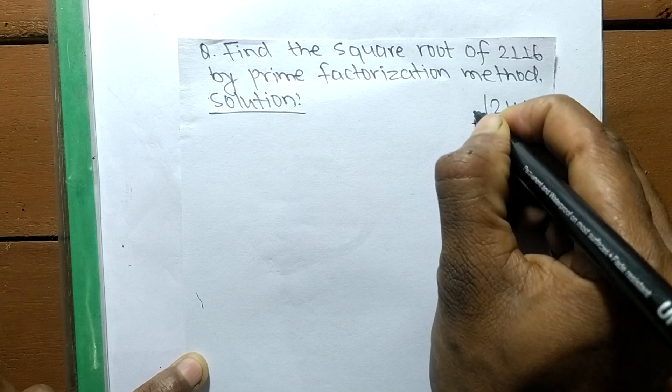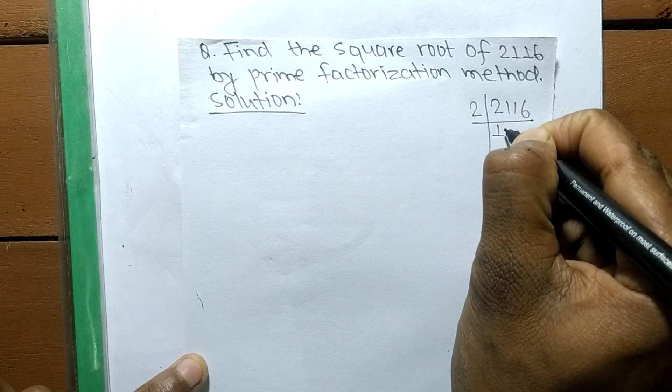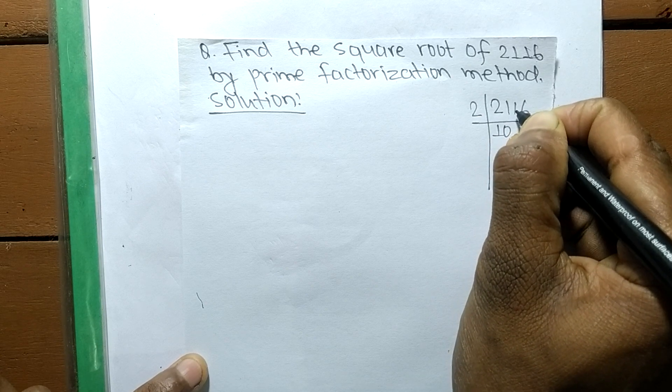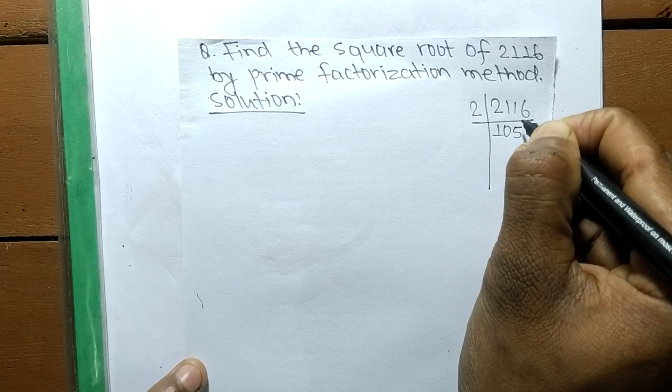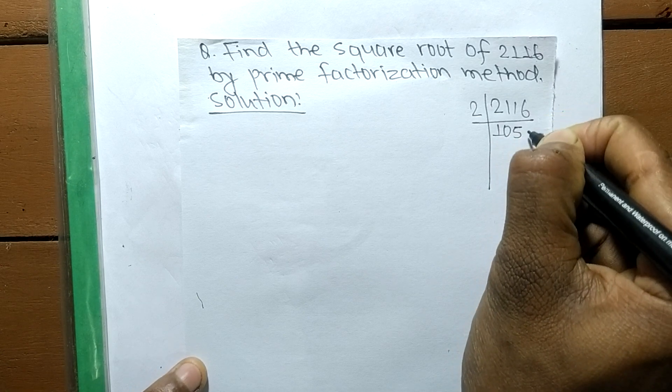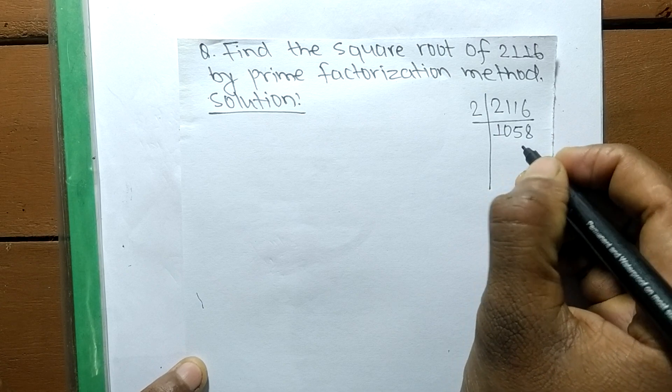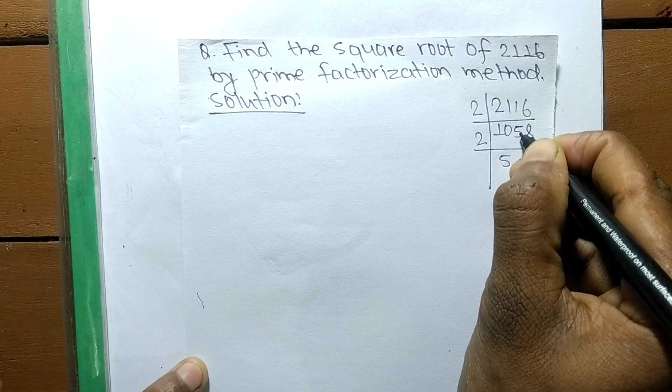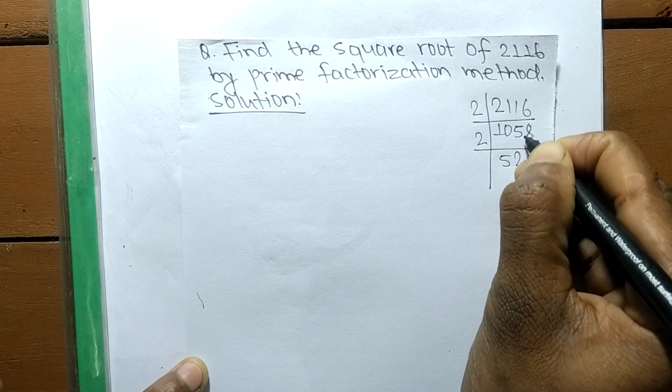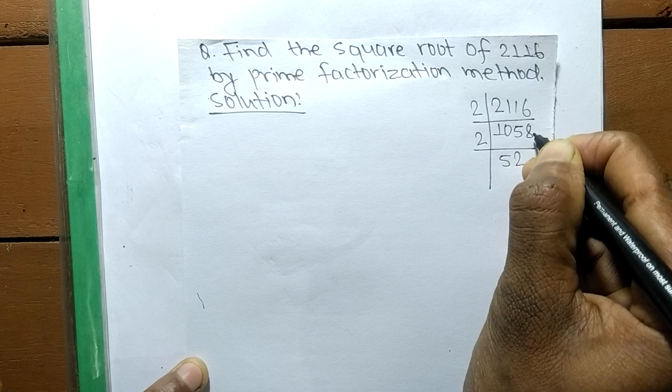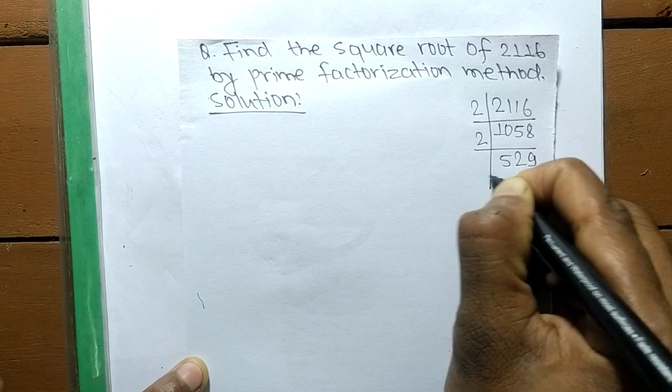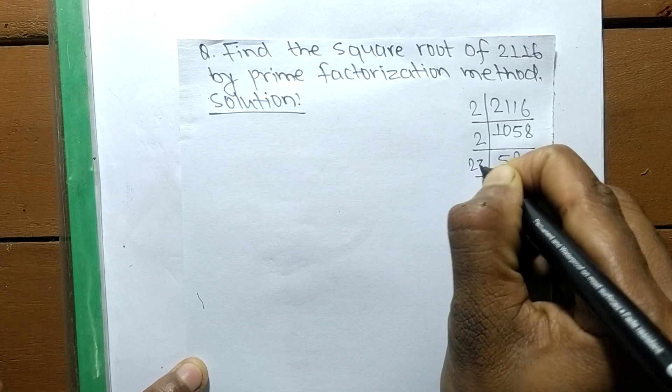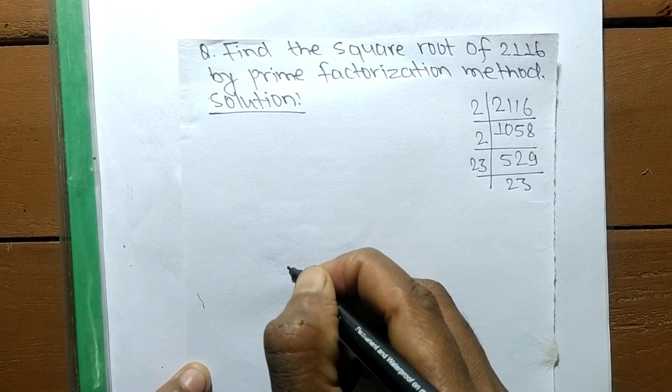2116 divided by 2 is 1058. 1058 divided by 2 is 529. The prime factors of 529 are 23 times 23. So we have found the prime factors of 2116.